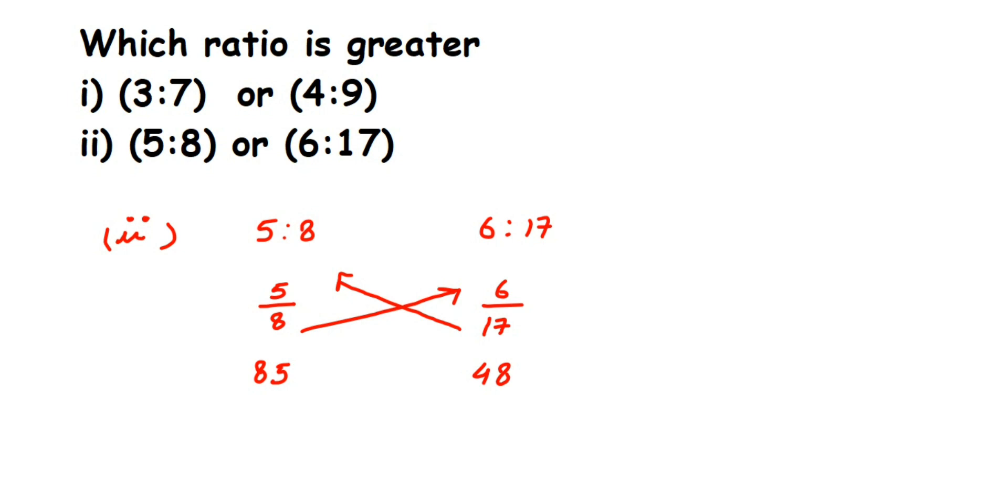Now which number is greater? 85 is greater than 48, which means 5 is to 8 is greater than 6 is to 17. So this is how you can compare the ratios. Just cross multiply, check which product is greater, and that ratio or that fraction will be greater.